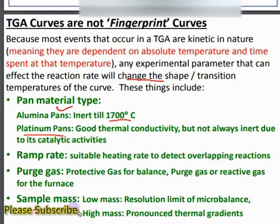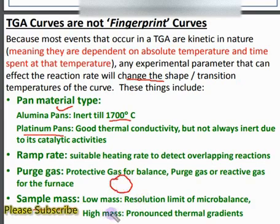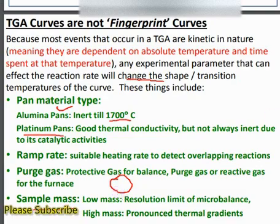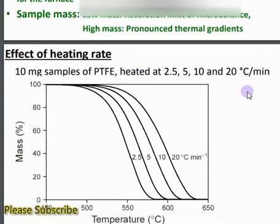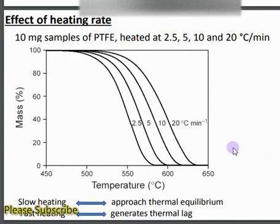Sample mass has a great influence on TGA curves. If we have a higher mass, there will be a thermal gradient developed. Conversely, too low a mass causes resolution limits of the microbalance. We have to maintain a minimum mass so that we can get well-resolved peaks for a particular sample.